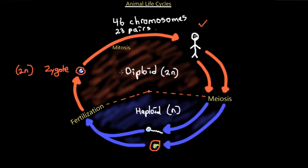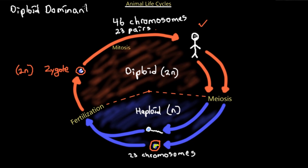These are homologous pairs — the same chromosome, one from the mother and one from the father. In the gametes, we have just 23 chromosomes in total. The production of gametes through meiosis enters the haploid stage. We call the animal life cycle diploid dominant because most of our life we spend in the diploid phase with 46 chromosomes. The only time we have 23 chromosomes is when we are gametes.